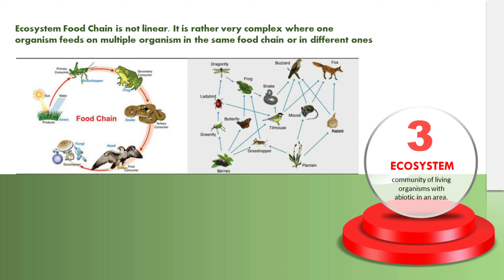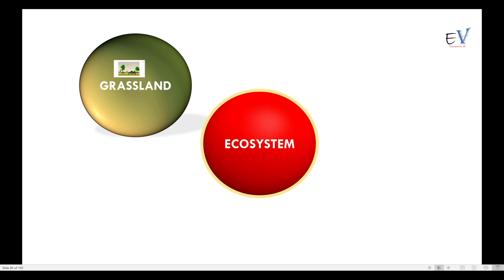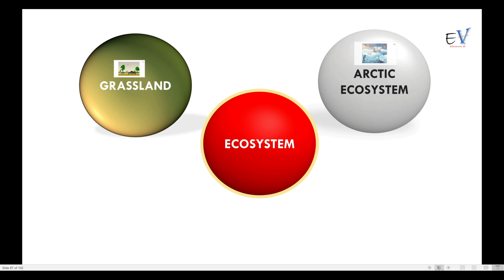Let us understand this with the help of a few examples. Look at this grassland ecosystem — an area where vegetation is dominated by grasses. The primary consumers dependent on grasses are cows, rabbits, and goats, while the secondary and tertiary consumers are snakes, foxes, eagles, and hawks. The abiotic requirements of all these organisms — temperature, sunlight, and nutrients — are almost similar, and thus they have created a system to live together with shared abiotic requirements and dependency on each other for food.